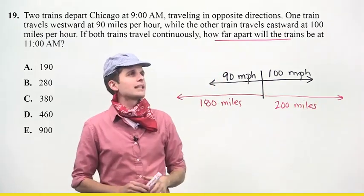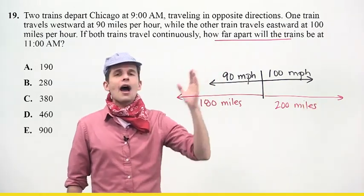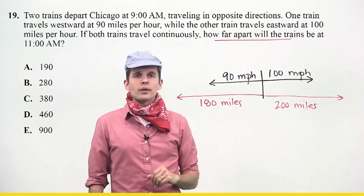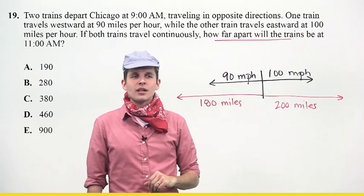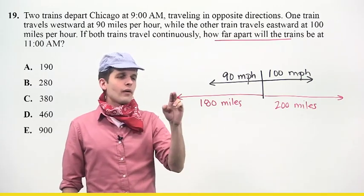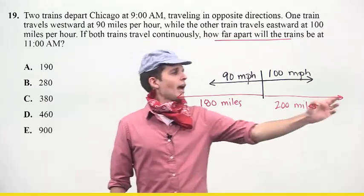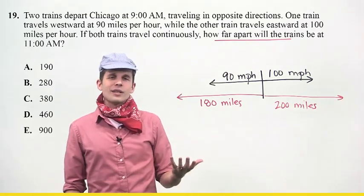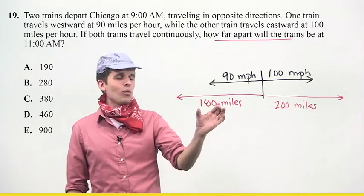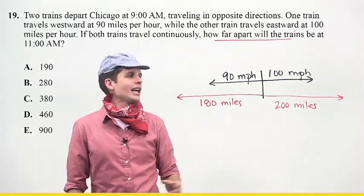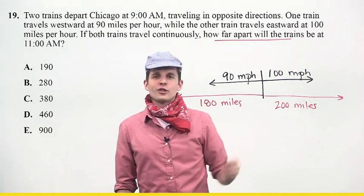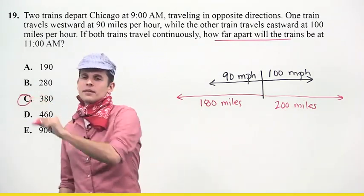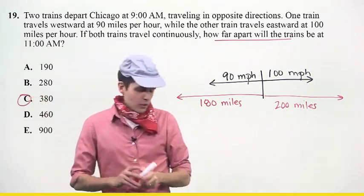Coming back to the question I identified — how far apart will the trains be after those two hours? I've got to figure out the distance between the two trains. It's really easy: I just take 180 and add it to 200, so the correct answer is C.